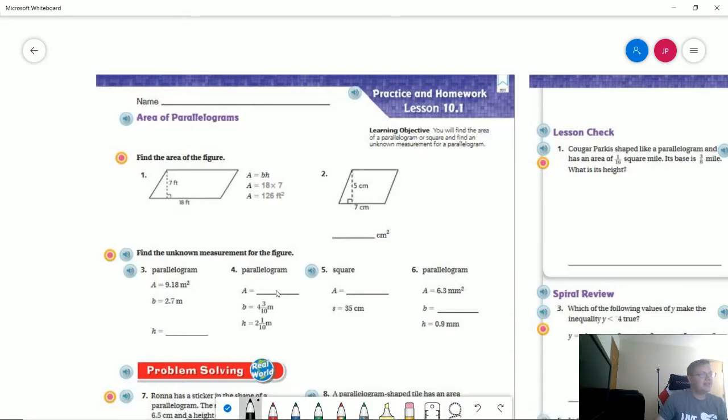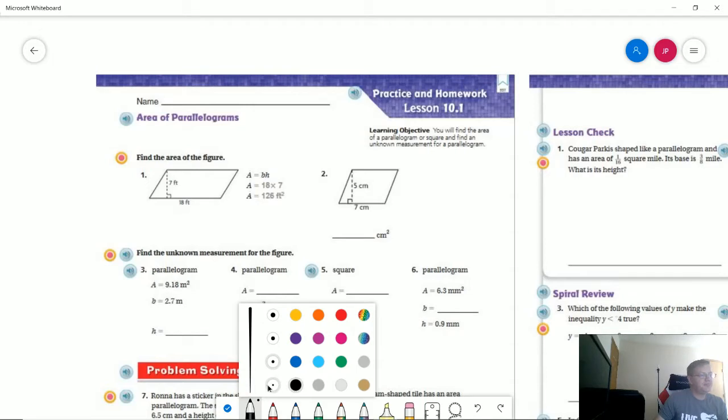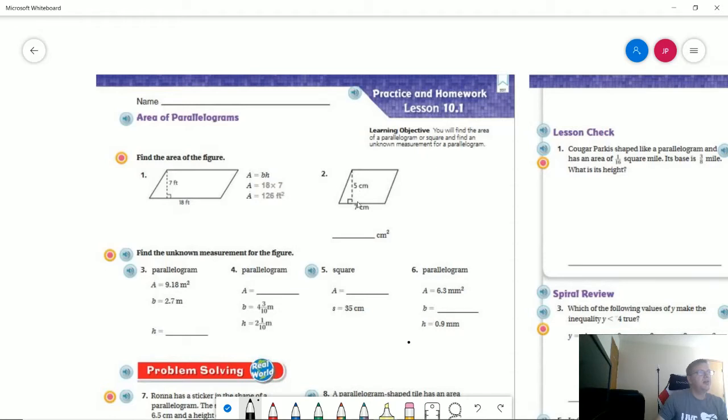So let's go ahead and take a look at number two. If we are working with this, we are doing the base times the height. So 7 times 5 is going to give us an answer of 35 centimeters squared.